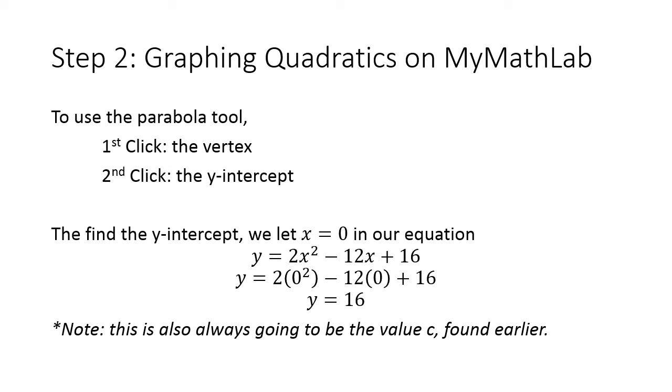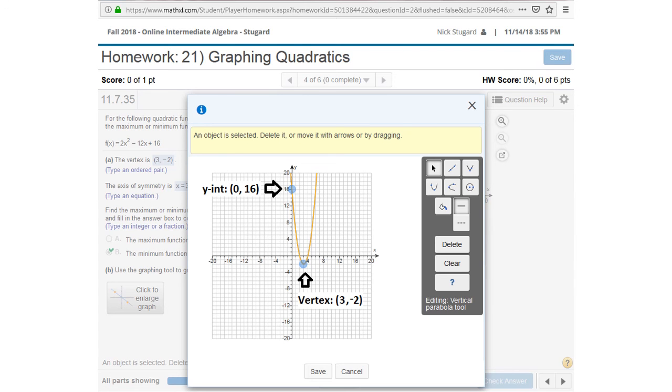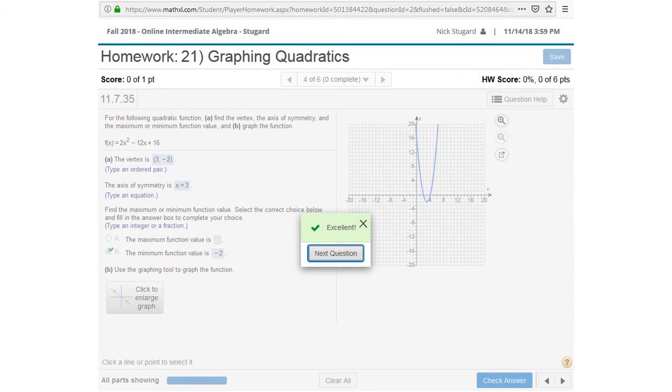The y-intercept means we get rid of all the x's. And if we get rid of all the x's, the mathematical thing is we let it be zero, but if we get rid of everything that has an x, the only thing that's left is the 16. Turns out that's also the value c we found earlier. And that's our y-intercept. So I graphed that using the tool, my first click being the vertex at three negative two, the second click being my y-intercept. So my y-axis at zero 16. And there we go. Excellent. And we're ready to move on to the next question.